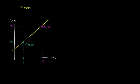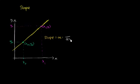So just as a review, the slope of this line — and a line by definition has a constant slope between any two points that you pick — the slope of this line, which is often denoted by the letter m, is your rate of change of y with respect to x. For a given change in x, how much are you changing y? That is change in y divided by change in x.